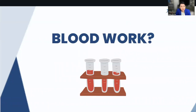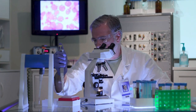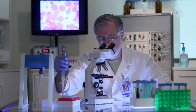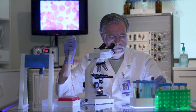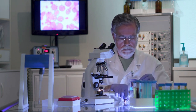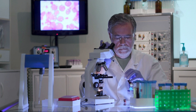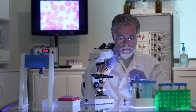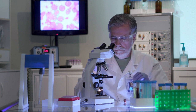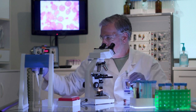The blood work I mentioned before — we test for your ANA, SSA, and SSB antibody. We look at your number of white blood cells, we look to see if you have more gamma globulins, we look to see if you have rheumatoid factor, and complement levels.